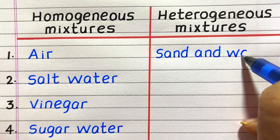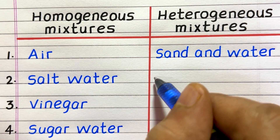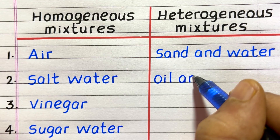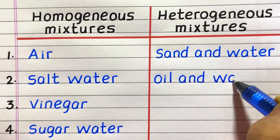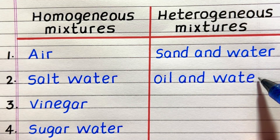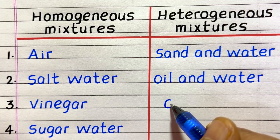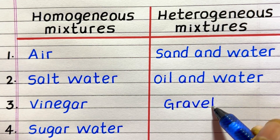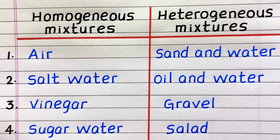First example of a heterogeneous mixture is sand and water. Second, oil and water. Third, gravel. Fourth, salad.